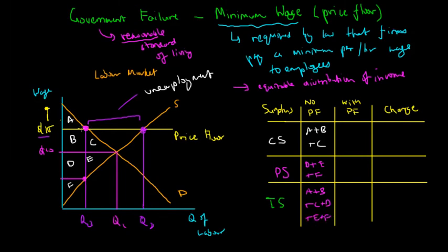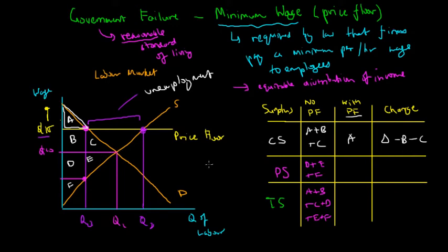With the price floor in place, the consumer surplus shrinks to only area A, since only firms willing to purchase labor above fifteen dollars remain in the market — a change of negative B minus C. The producer surplus with the price floor becomes B plus D plus F, giving a change of plus B minus E. So if B is greater than E, producers — that is, workers — gain overall from the minimum wage.